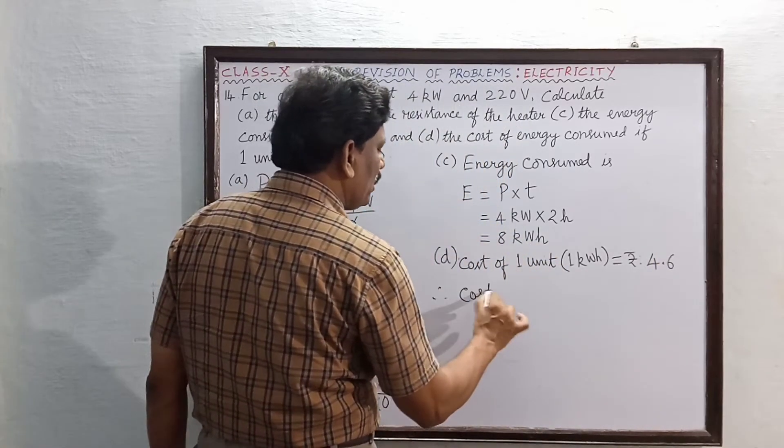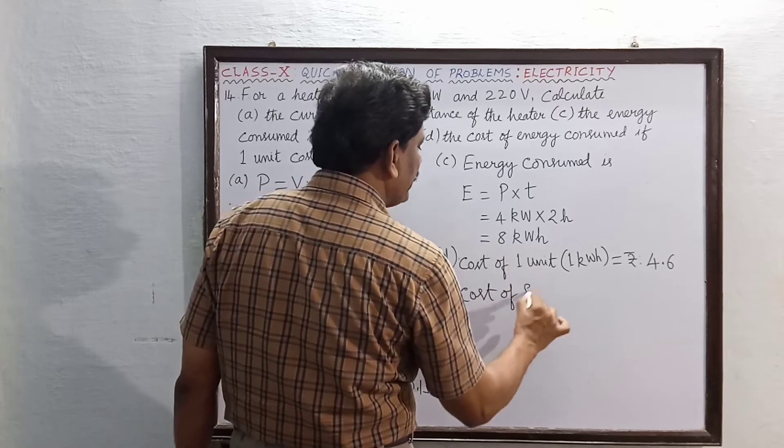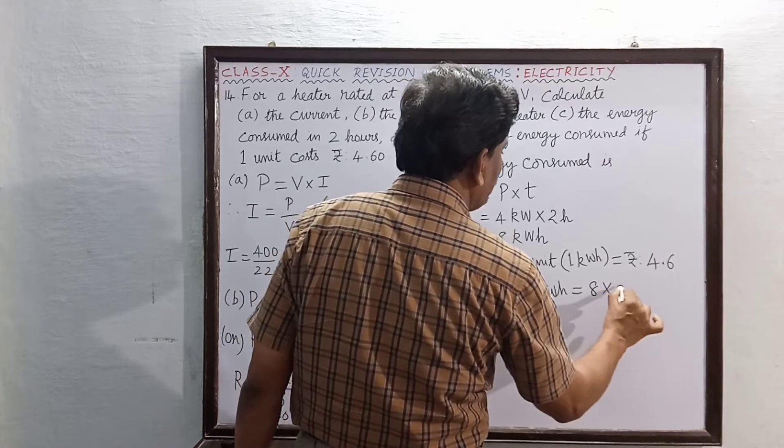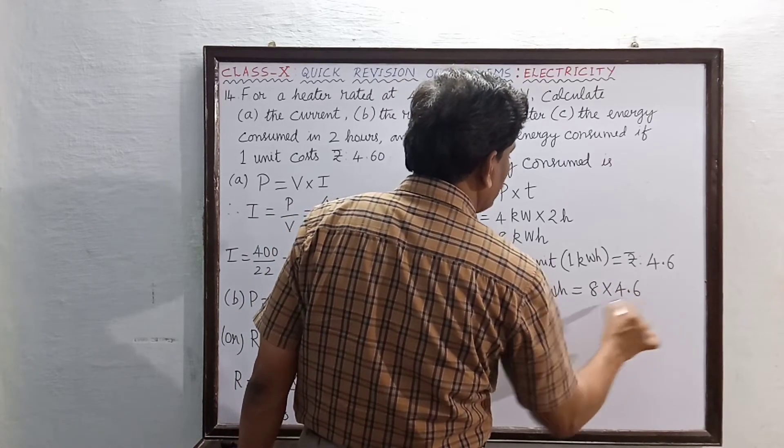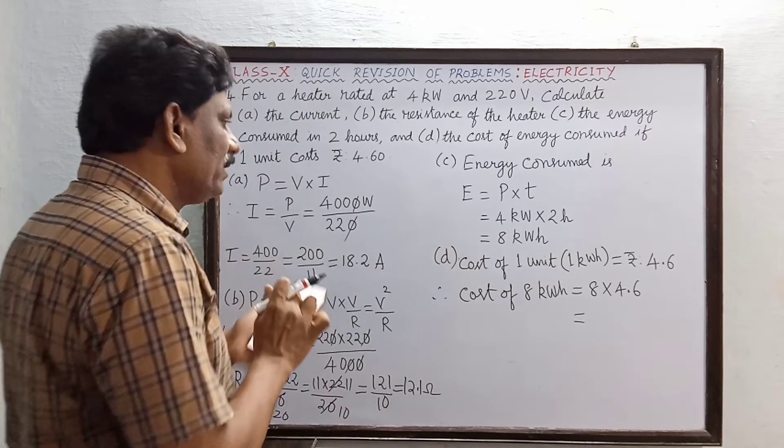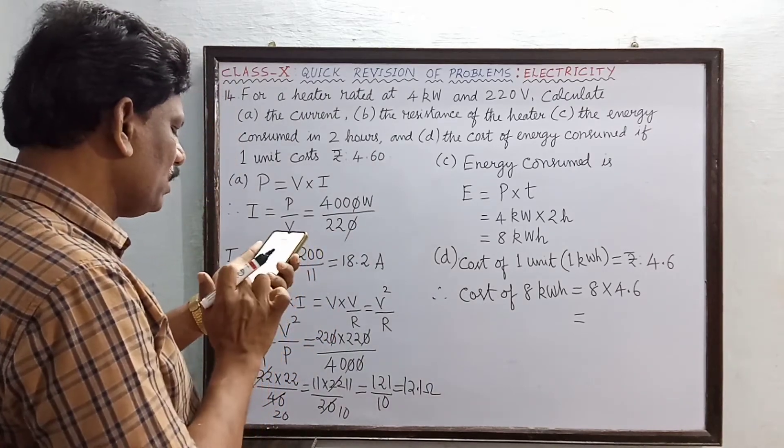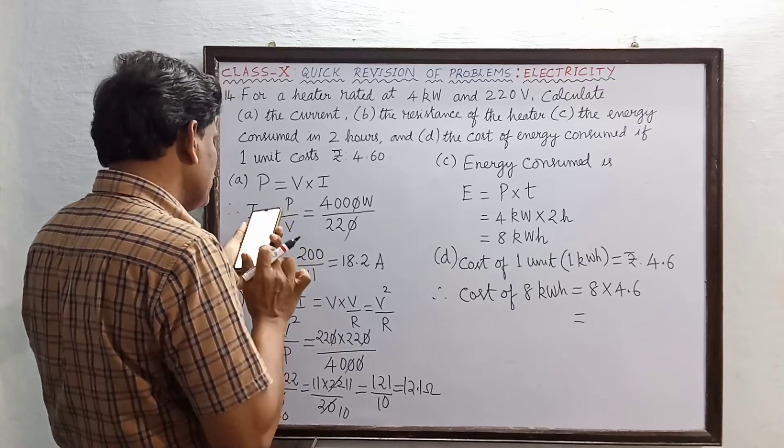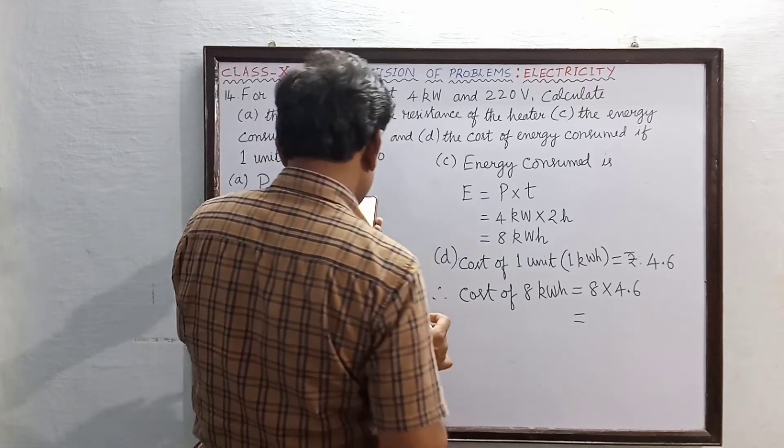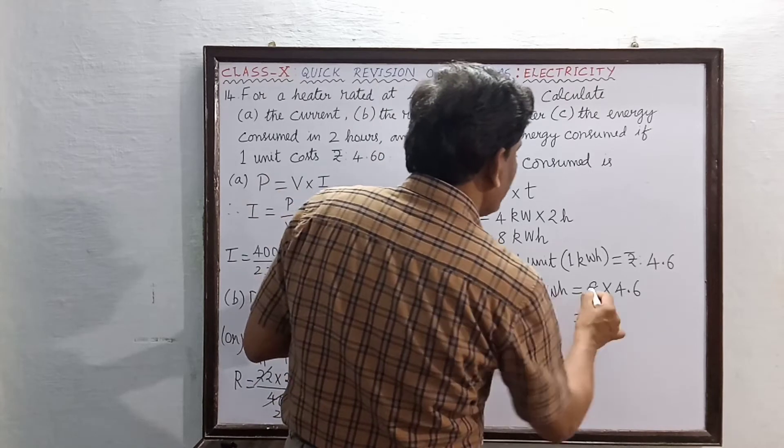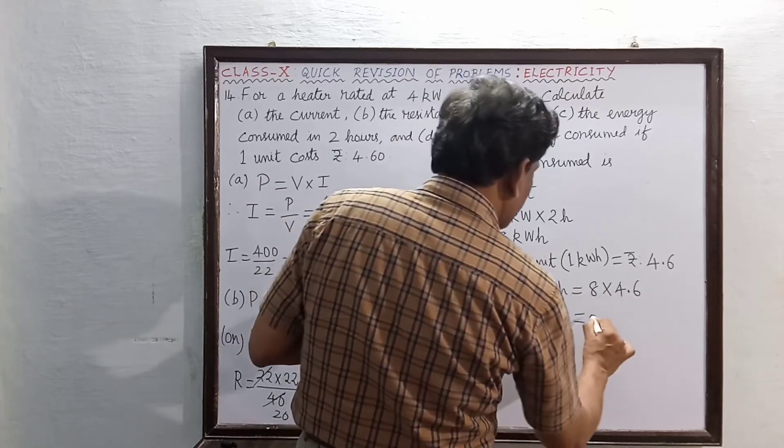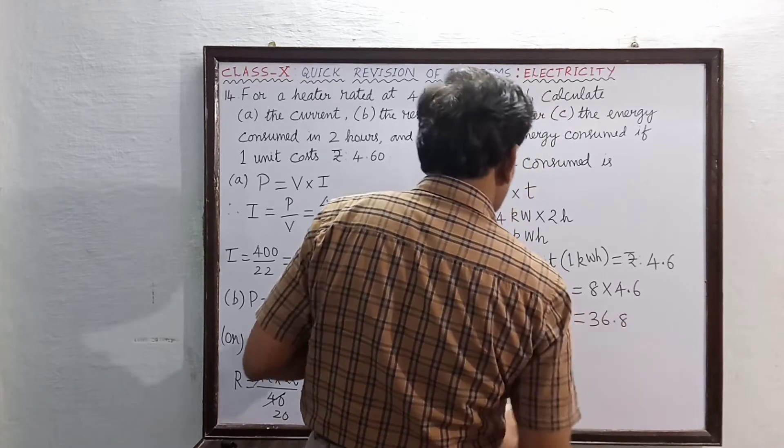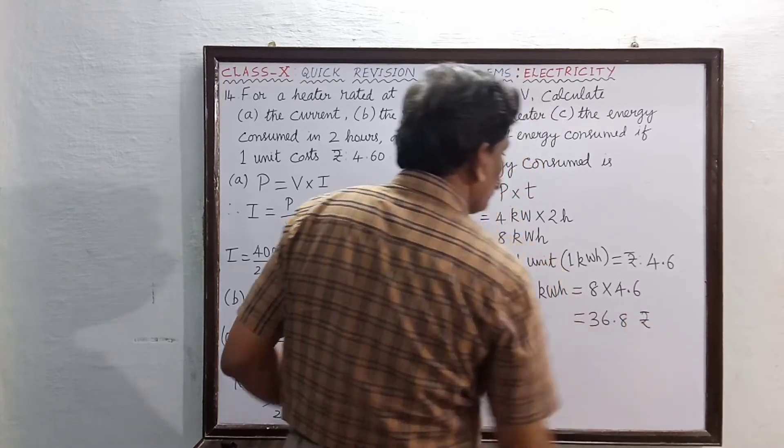Therefore, what is the cost of 8 units? 8 units means 8 kilowatt hour. This is equal to 8 into 4.6. We have to multiply 4.6 into 8. This is equal to 36.8 rupees.